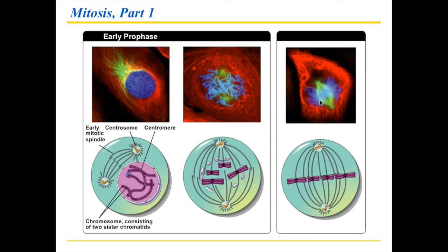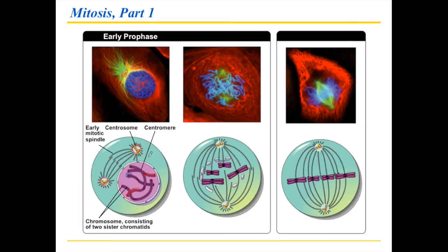The first part of mitosis consists of two parts: prophase and metaphase. In early prophase, comparing with the previous picture, you can see that the chromosomes are starting to congeal — starting to become a visible entity. You can clearly see two areas, two centers — those are the centrosomes — beginning to move apart, forming fibers in between. Each chromosome consists of two sister chromatids, and this whole process is just starting to get going.